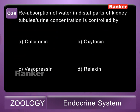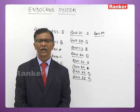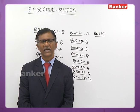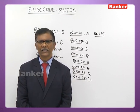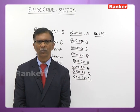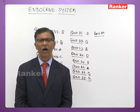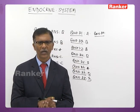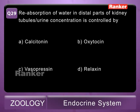Twenty-ninth question: reabsorption of water in the distal part of the kidney tubule to concentrate urine is controlled by A - calcitonin, B - oxytocin, C - vasopressin, D - relaxin. Vasopressin, also called anti-diuretic hormone (ADH), is released by posterior pituitary. It stimulates the distal convoluted tubule and collecting duct of the nephron to ensure absorption of water from outgoing urine. The correct answer is C — vasopressin.